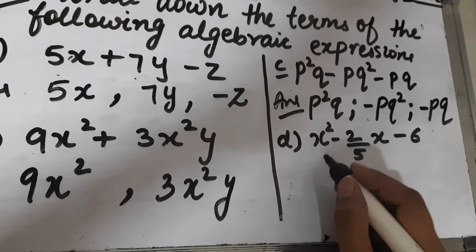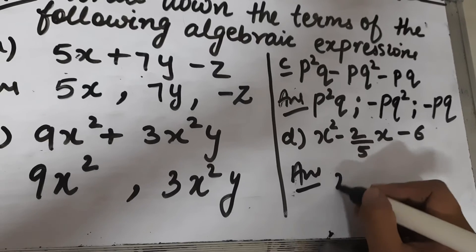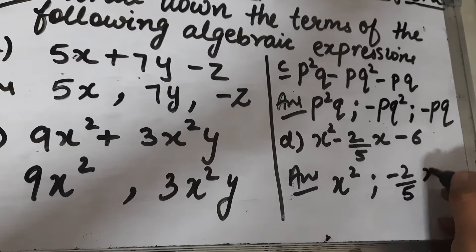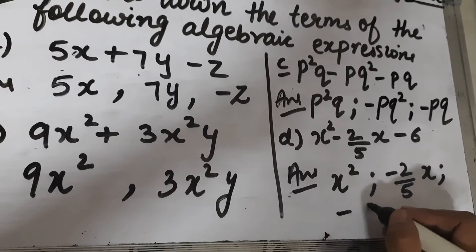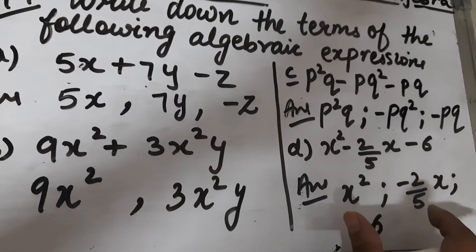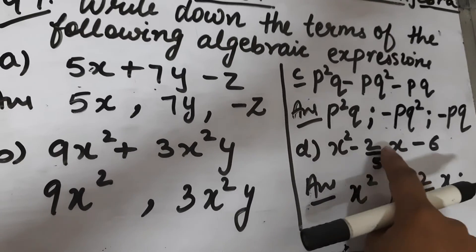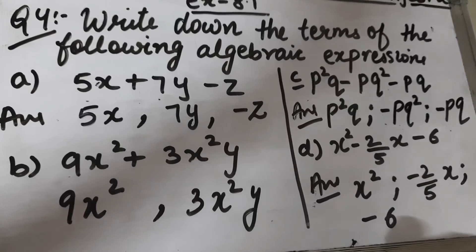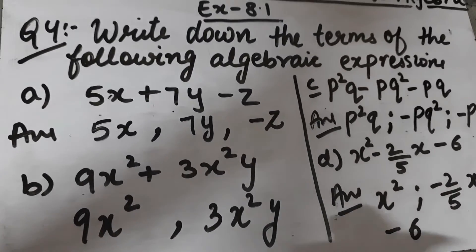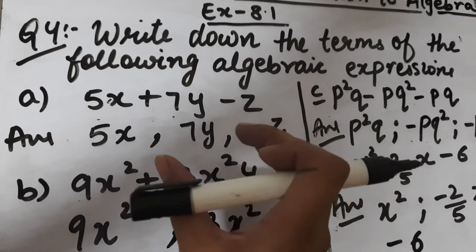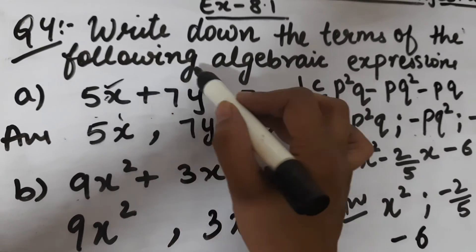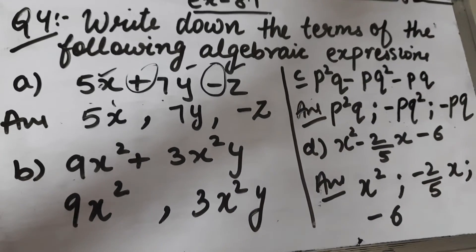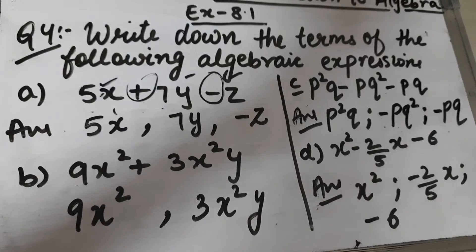Part (d) is x² - 2/5x - 6. The terms are: first term is x², second term is minus 2/5x, and third term is minus 6. So this is how you write the terms of an algebraic expression — they are the parts connected by a plus or minus sign. This completes question number 4 of exercise 8.1.